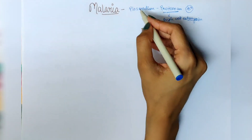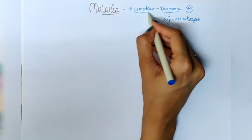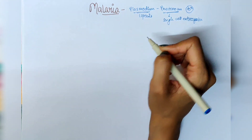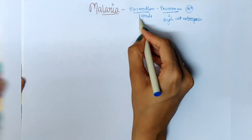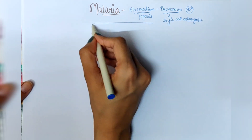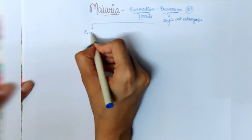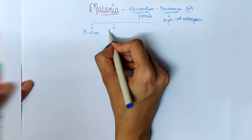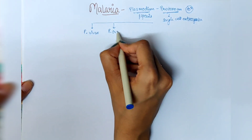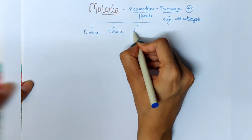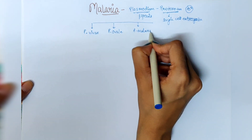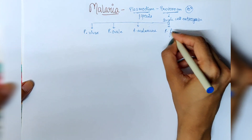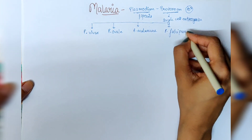There are four species of plasmodium that infect humans. These four species are: plasmodium vivax, plasmodium ovale, plasmodium malariae, and plasmodium falciparum.